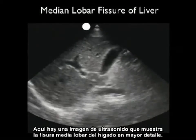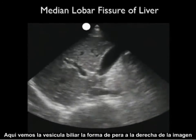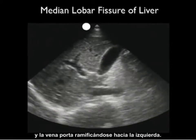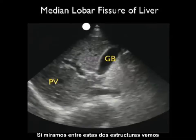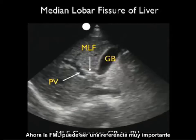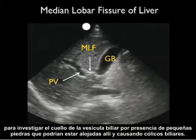Here's an ultrasound image showing the median lobar fissure of the liver in greater detail. We see the gallbladder, the pear-like structure to the right, and the branching portal vein to the left. In between the two structures we see the thin white line known as the median lobar fissure. The MLF is a very important landmark for walking from the portal vein up to the neck of the gallbladder to inspect for small stones causing biliary colic.